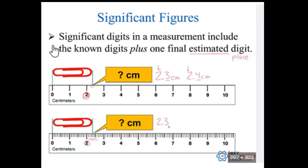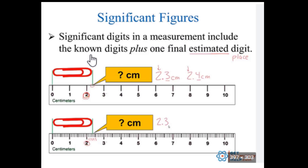Hello, chemistry class. I wanted to look at our reading instruments with significant figures worksheet and look at how we decide what to write down for our measurements. Looking at significant figures, our digits include all of the known digits, which means what does our measuring device let us be certain to.